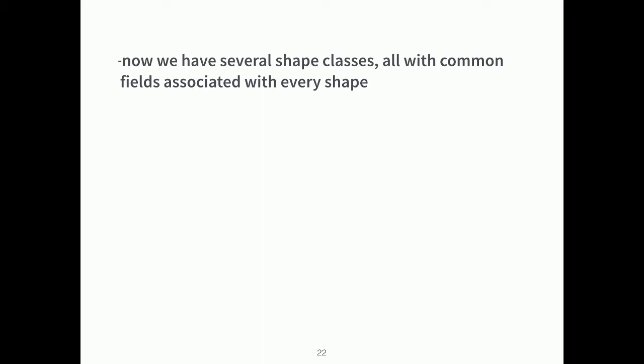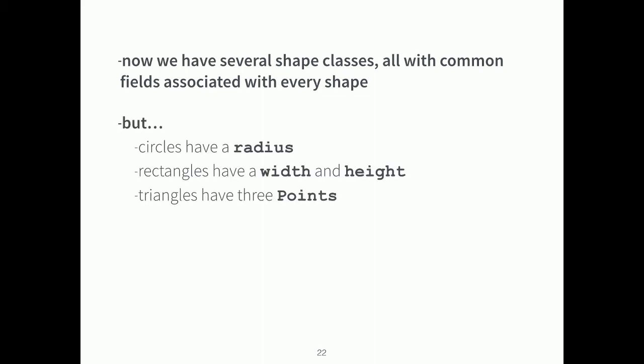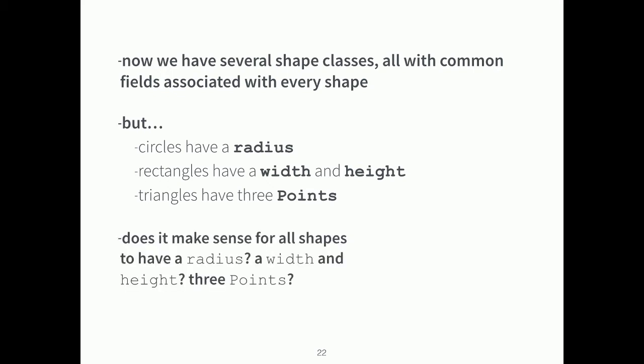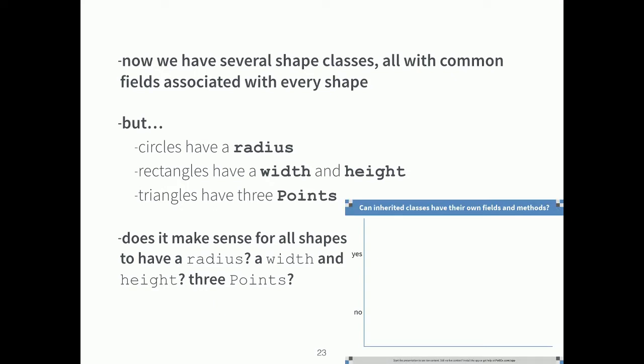Now we have common fields for all shapes, but not all shapes are created equal. Circles might have a radius, rectangles have width and height, and a triangle might be defined by three points. So we have things that are different between these shapes.